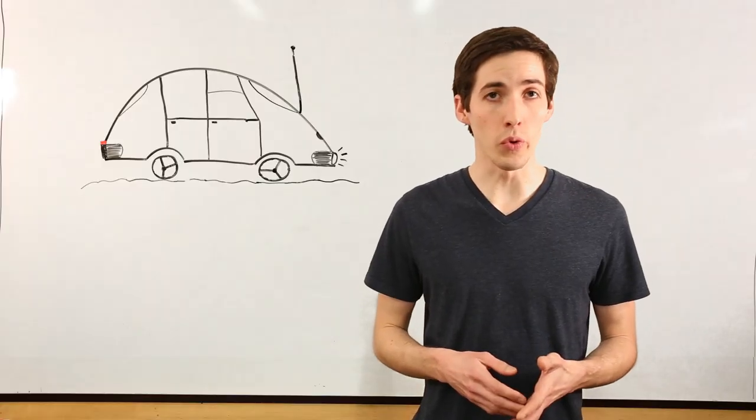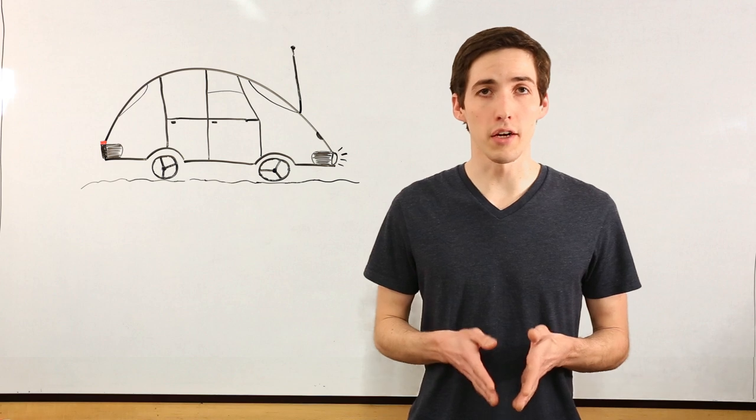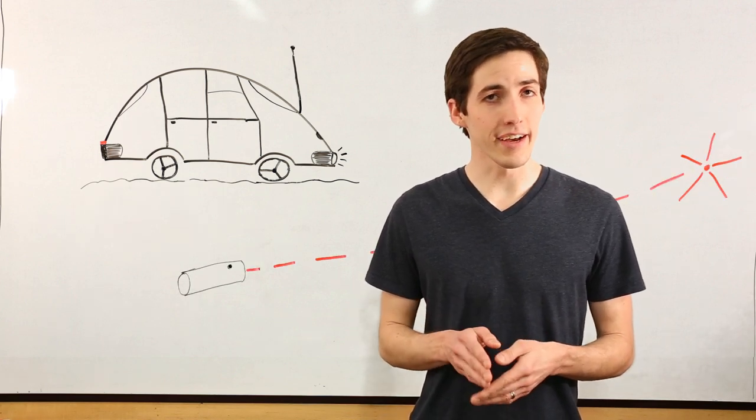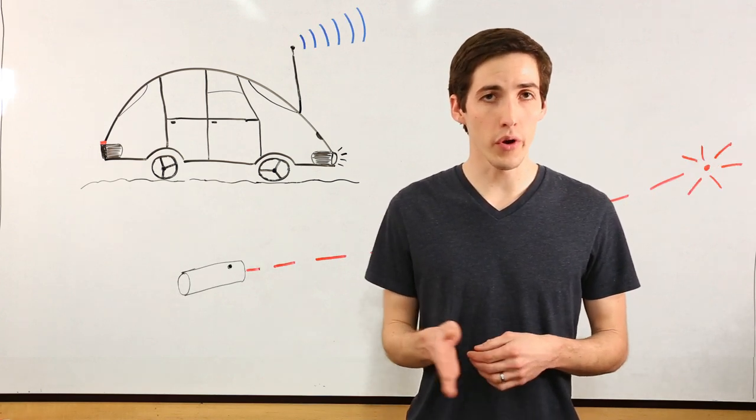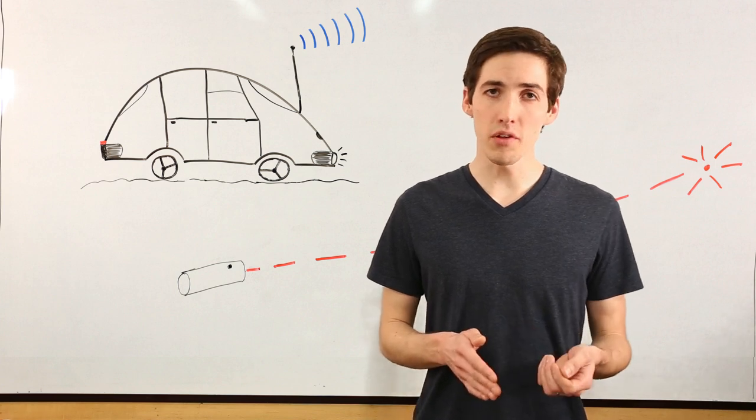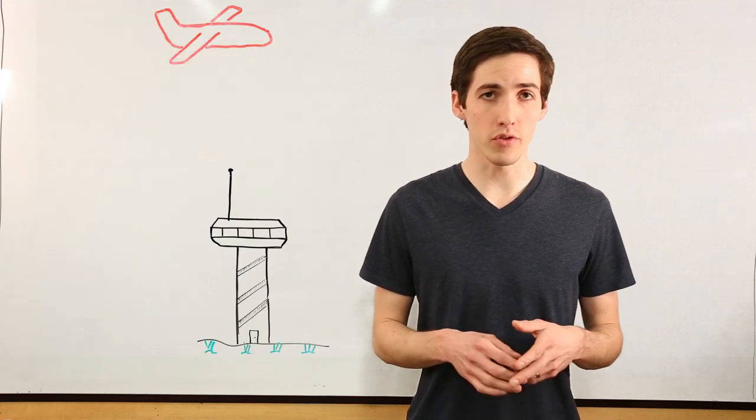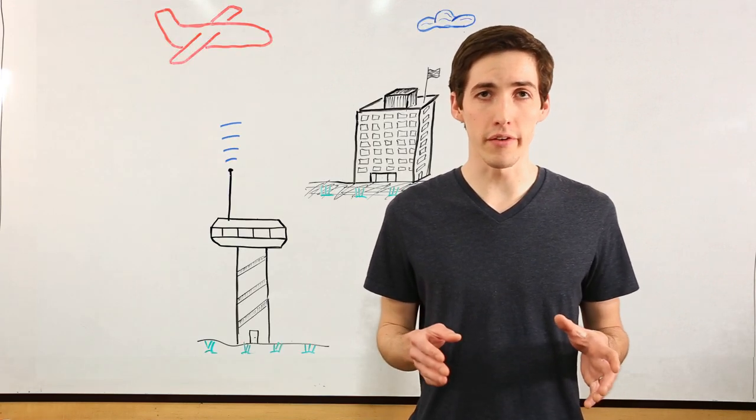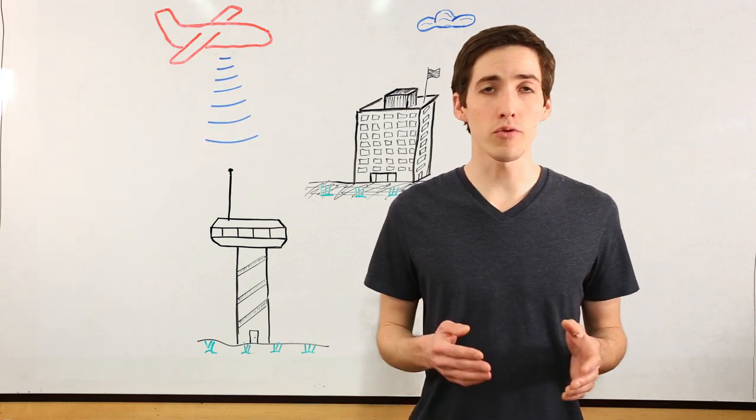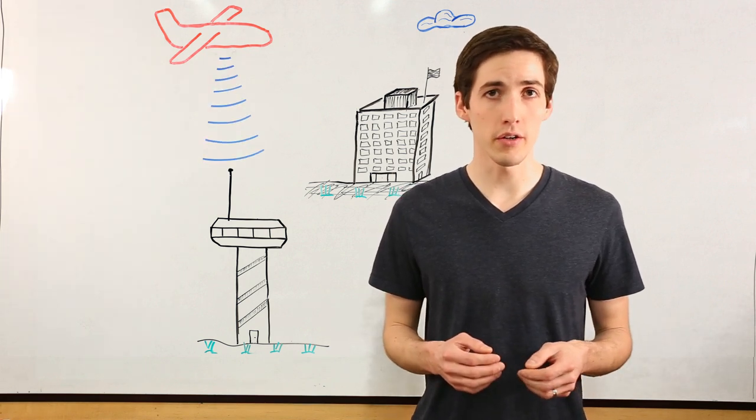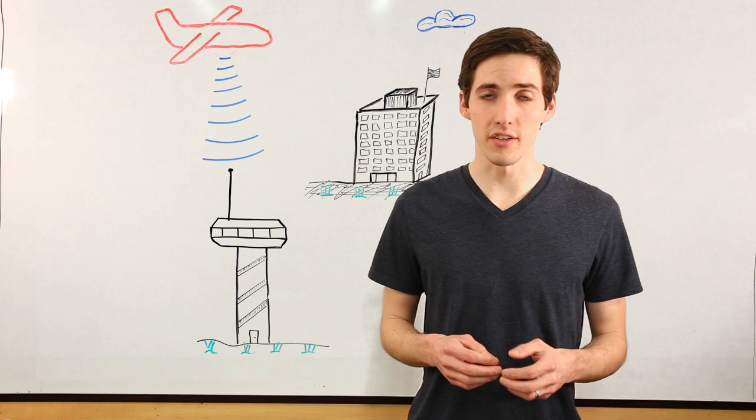But sometimes that's not what we want. Sometimes we want something more like a laser pointer, or an antenna that has a very narrow beam of electromagnetic waves that we can point in any direction. An example of this is in radar systems. They send out an electromagnetic wave, and they listen for that wave to bounce off of an object and return to the radar.